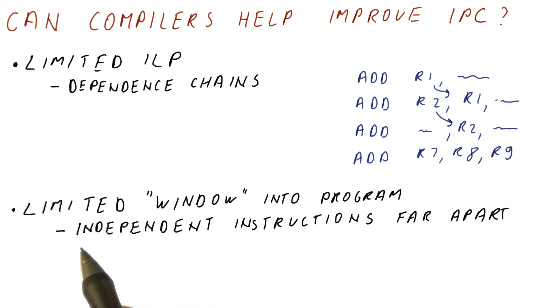As we will see, the compiler can help us put these independent instructions closer to each other so that the IPC achieved by the processor is closer to the available ILP.